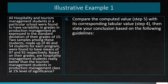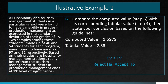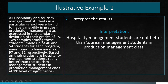Step 6: We compare the computed value and tabular value. Our computed value of 1.5979 is less than the tabular value of 2.33, therefore we accept the null hypothesis. The interpretation is that hospitality management students are NOT better than tourism management students in their Production Management class — meaning there is no significant difference between the mean scores of the 40 and 54 students.